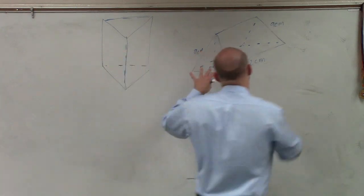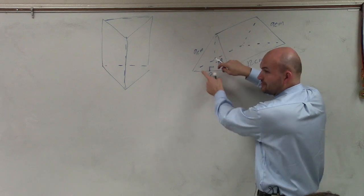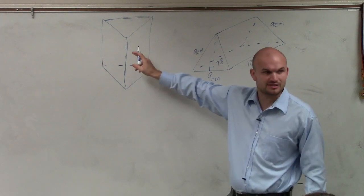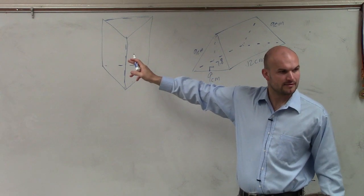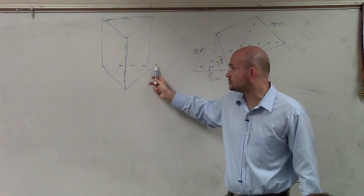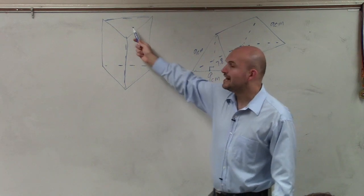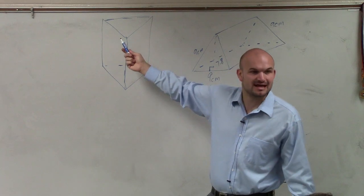If I took this triangular prism and I put it on the triangle base, it would look something like this, correct? And what I want you guys to understand is this is the triangle, which we would call the base. And notice the top is exactly the same, correct?